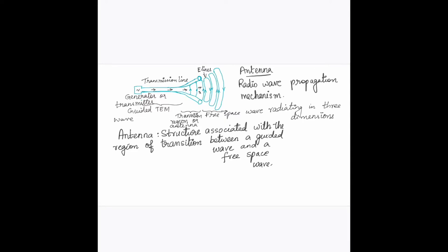This video discusses antennas. In any communication system, when you want to transmit information, you will have a transmitter connected to an antenna. At the receiving end, the signals will be received by another antenna connected to the receiver. So in any communication system, to transmit information wirelessly from one place to another, we require antennas. Knowledge of antennas is very important when you want to design any communication system.